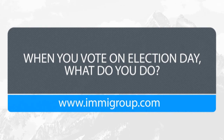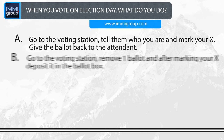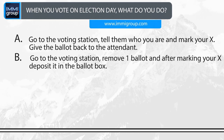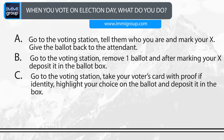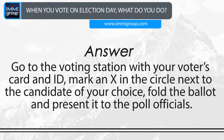When you vote on election day, what do you do? A. Go to the voting station, tell them who you are and mark your X, give the ballot back to the attendant. B. Go to the voting station, remove one ballot and after marking your X deposit it in the ballot box. C. Go to the voting station, take your voter's card with proof of identity, highlight your choice on the ballot and deposit it in the box. D. Go to the voting station with your voter's card and ID, mark an X in the circle next to the candidate of your choice, fold the ballot and present it to the poll officials. Answer: Go to the voting station with your voter's card and ID, mark an X in the circle next to the candidate of your choice, fold the ballot and present it to the poll officials.